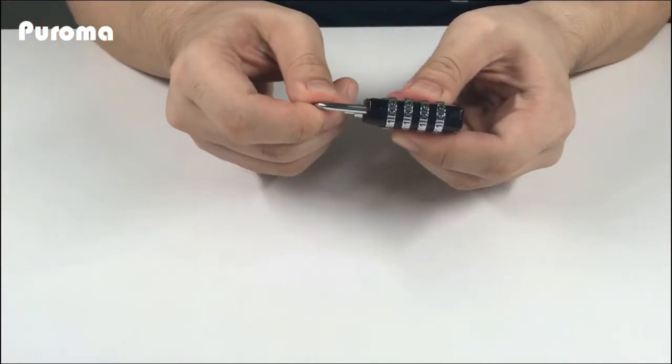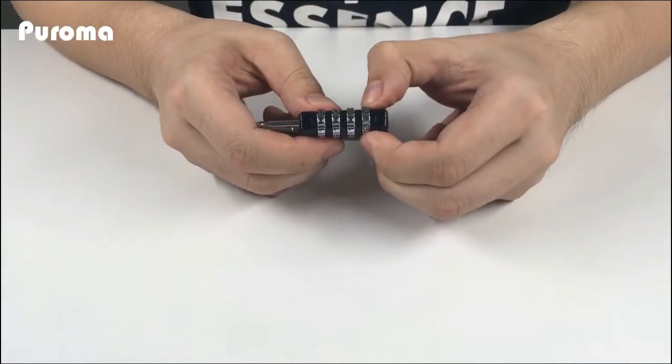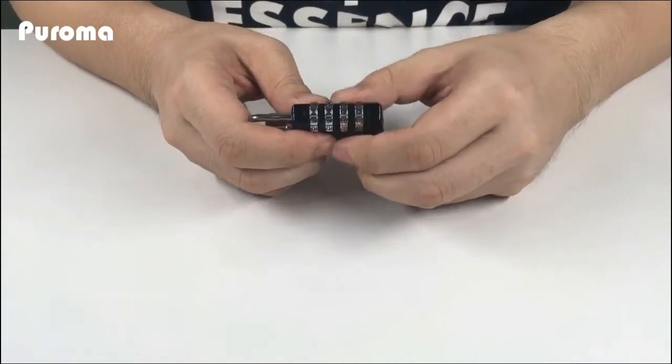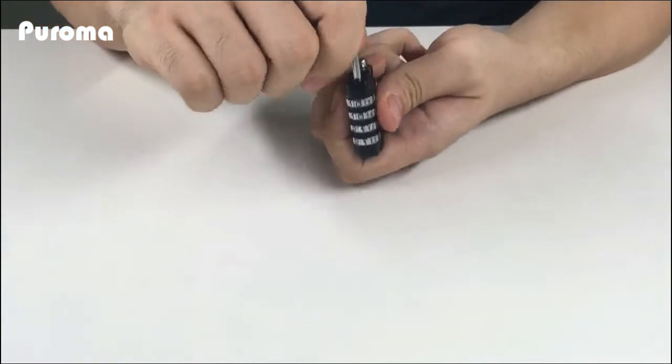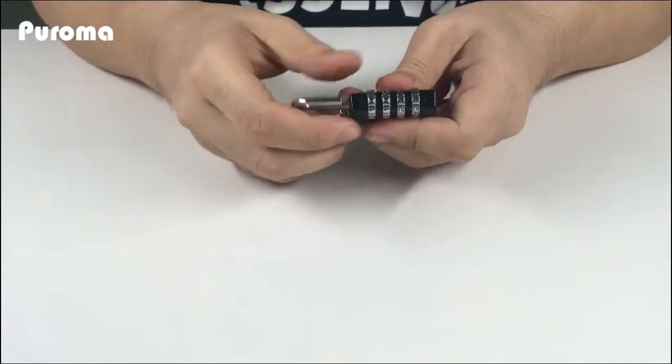So please remember the number you have set. You can use the same method to set any combination you want. For example, I set 0-0-0 again using the same method.